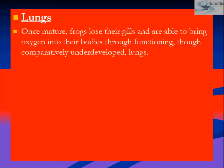Now, lungs are another respiratory organ. For an amphibian to thrive on land, the gill-to-lung transition must occur during metamorphosis. Once mature, the frog loses its gills and is able to bring oxygen into the body through functioning but initially underdeveloped lungs.